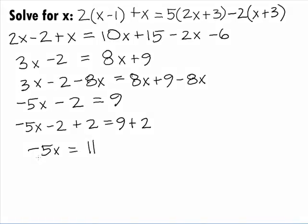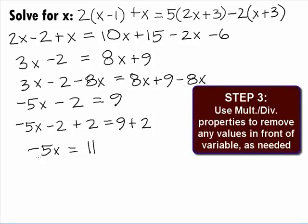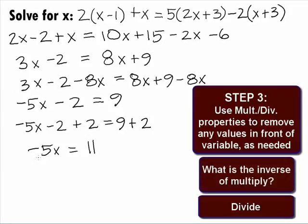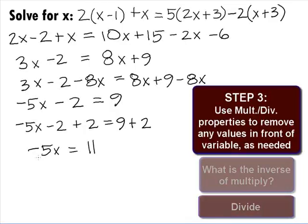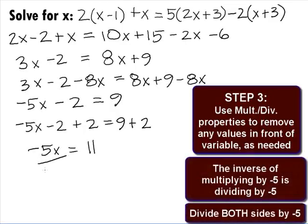We are not done because x is not by itself. In Step 3, we want to use the multiplication or division property of equality to remove any values that are in front of the variable. We need to move that negative 5 that is being multiplied times the x. What is the inverse of multiply? Divide. So, we need to divide both sides by negative 5.